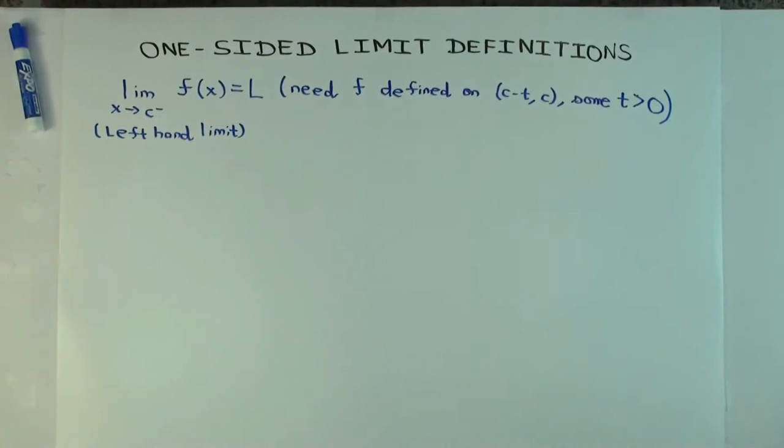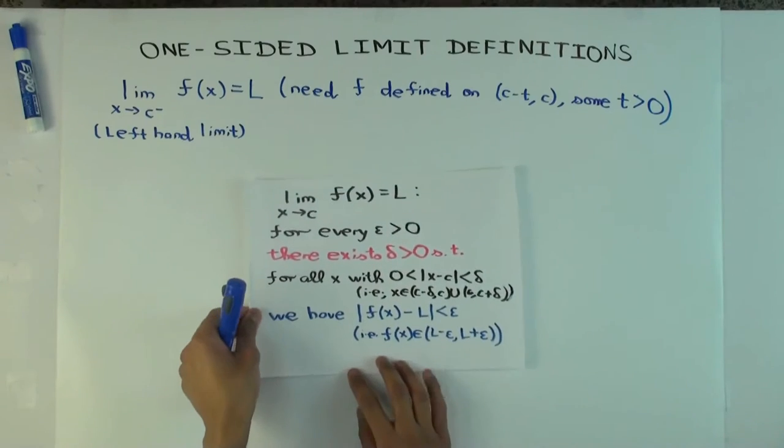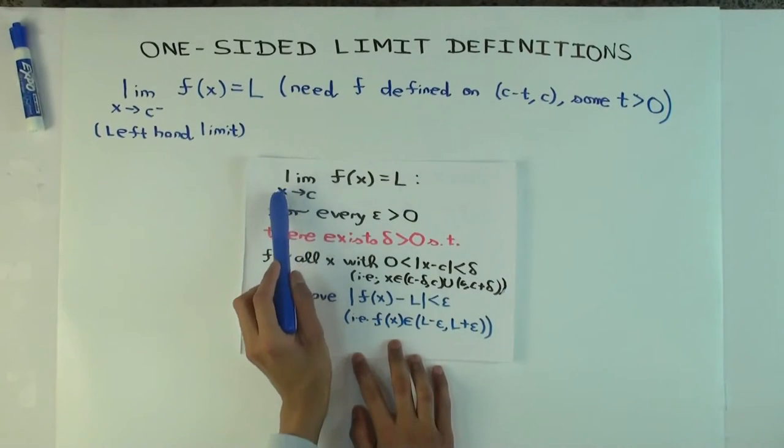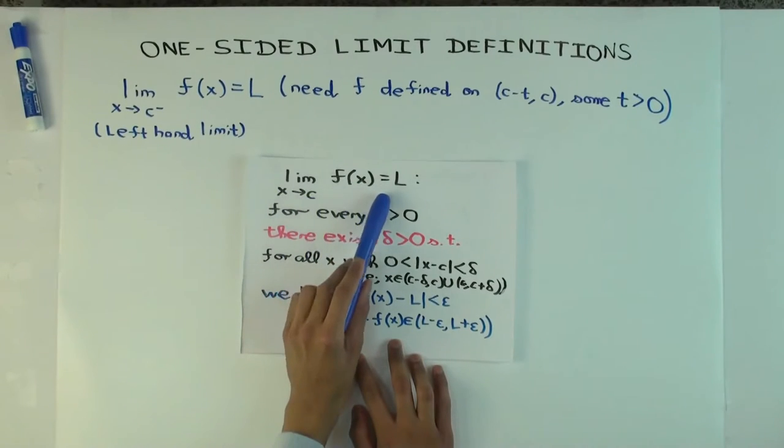Okay, let me first remind you what the definition of two-sided limit says. So here's what it says. Here, we have this. So it says, limit as x approaches c, f of x equals L.